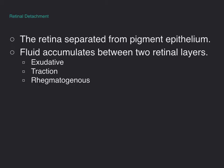Rhegmatogenous detachment is the most common type of retinal detachment. It's a full-thickness break in the sensory retina with passage of liquified vitreous through the break into the subretinal space. The primary symptoms of retinal detachment are painless changes in vision. Most commonly people will say they see flashing lights, fireworks, or sparks inside of their eye, which are followed by small floaters — spots in the field of vision — as the early symptoms.